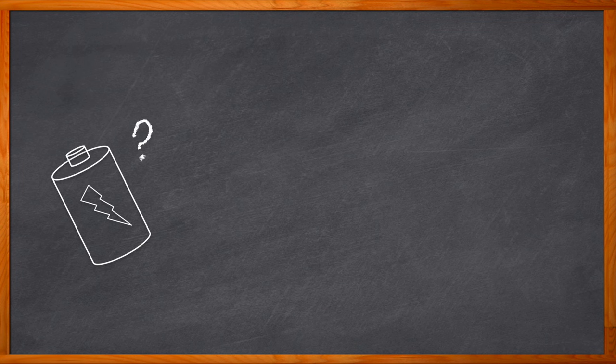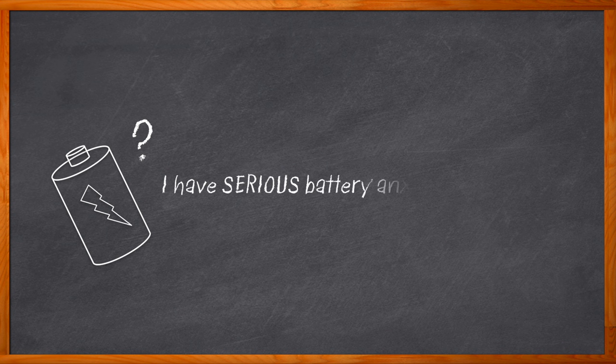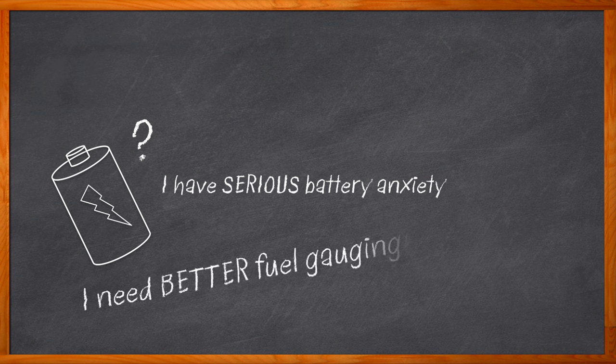How many times have you considered the charge of an embedded device you own? How many times today have you thought about how much juice is left in a battery? Probably a lot. But how do we implement fuel gauging in the devices we design? For a long time we pretty much had two choices, and neither of them were that great: coulomb counting gauges or discrete hardware fuel gauges — well, until now.